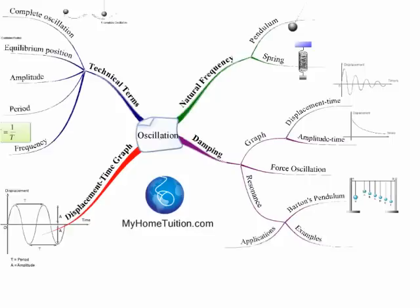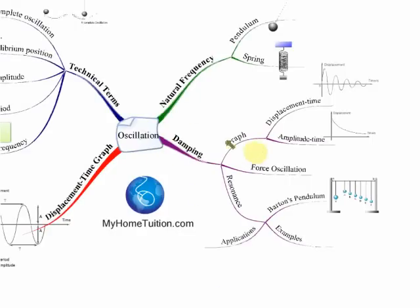From the graphs of damping, there are two types: the displacement-time graph and the amplitude-time graph. From the displacement-time graph we can see that the amplitude decreases over time, and from the amplitude-time graph we can also see that the amplitude decreases over time.